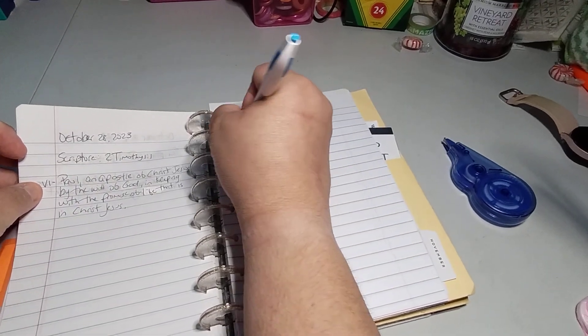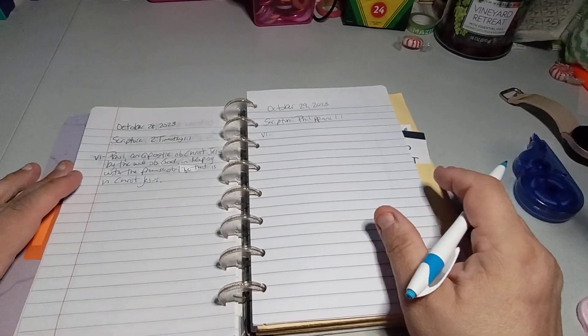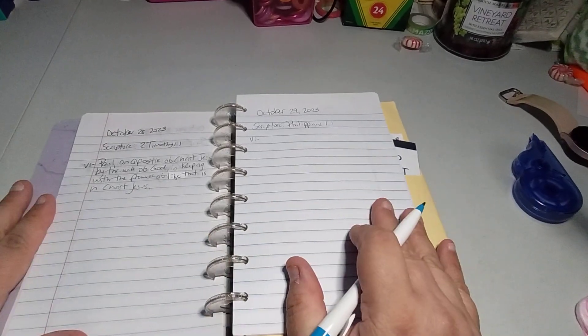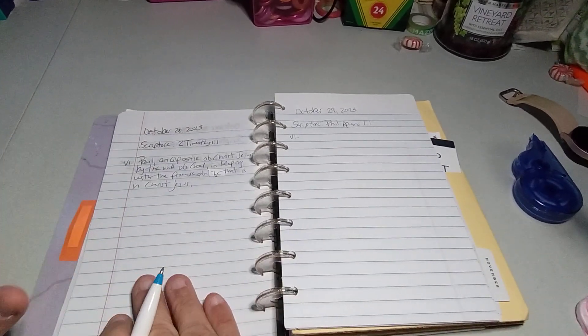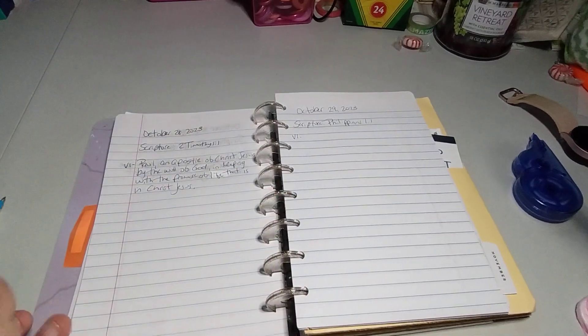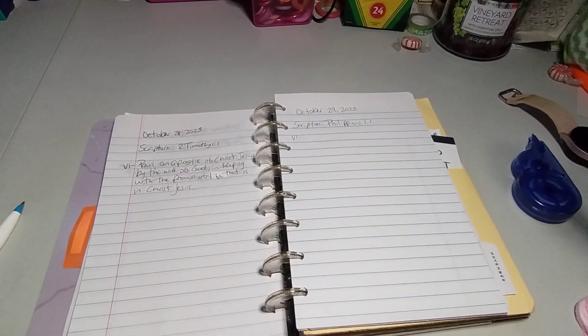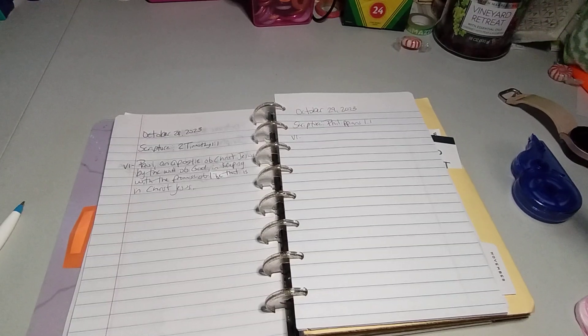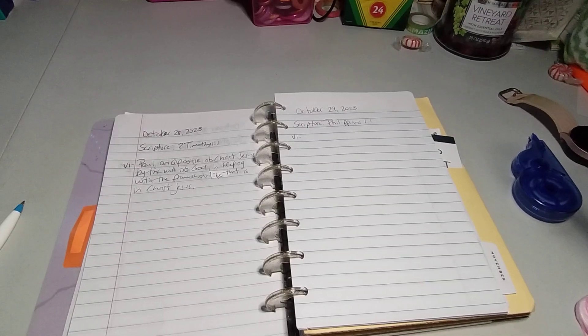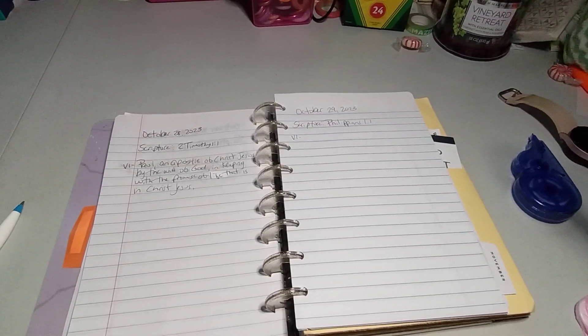Yeah, so I don't know. I hope you guys are enjoying the video. So there is the daily scripture writing. We can read it from here because I did kind of mess up here. Let's read it. Paul, an apostle of Christ Jesus by the will of God in keeping with the promise of life that is in Christ Jesus. That's the charger. It's like, yes, the will of life.